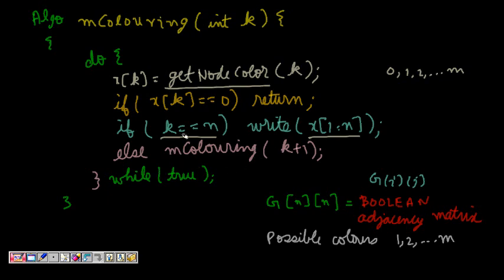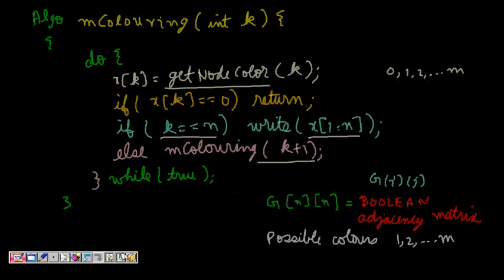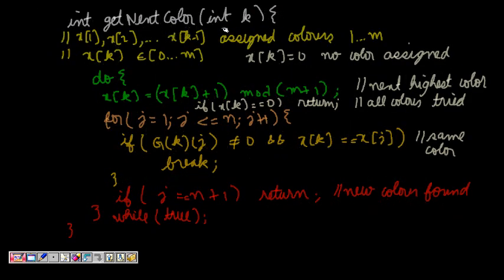If xk is not zero — meaning a valid color was assigned — and k is not equal to n, we call m_coloring(k+1) to assign a color to the next node. The function get_node_color (noted as a typo for 'get next color' in the code) handles the color assignment for node k.